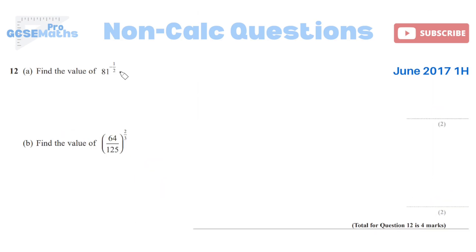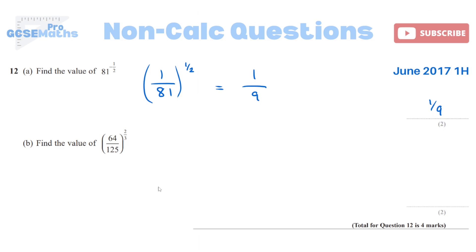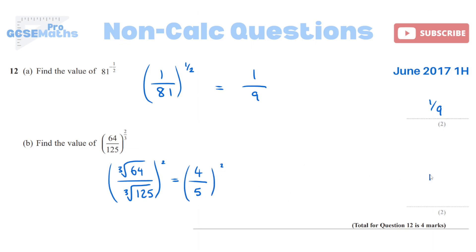Now negative and fractional indices. Work out 81 to the power of negative a half. A negative power means the reciprocal — I do that first so I don't forget: that's 1 over 81, to the power of a half. Fractional powers: the denominator means a root. A denominator of 2 means square root. Square root of 1 is 1, square root of 81 is 9, so the answer is 1 ninth. Part B: find the value of 64 over 125 to the power of 2 thirds. The denominator 3 means cube root. Cube root of 64 is 4, cube root of 125 is 5. Then the 2 means square both: 4 squared is 16, 5 squared is 25, giving 16 over 25.